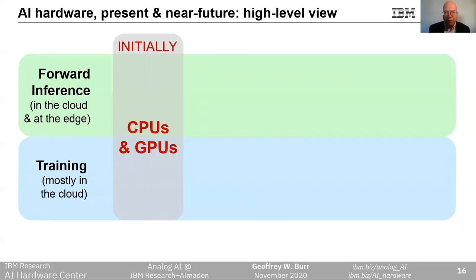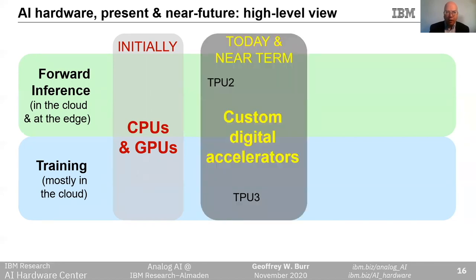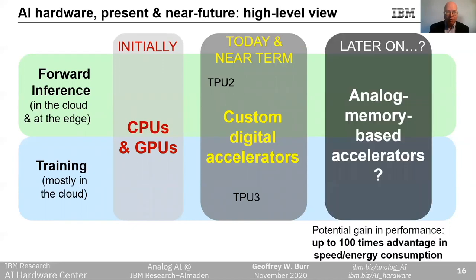If we look at the AI hardware roadmap across three opportunity areas — forward inference in the cloud, inference at the edge, and training which will mostly be in the cloud — we started this field with general-purpose CPUs and GPUs, and we expect these to remain as a critical workhorse for many years. There are many people trying to implement custom digital accelerators to scale compute performance and energy efficiency, including Google's TPU2 and TPU3. In the next section, I'll briefly summarize the digital accelerator work we're doing within IBM Research, before turning to my main topic of analog memory-based accelerators for deep learning.